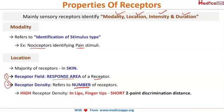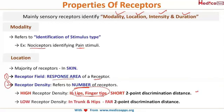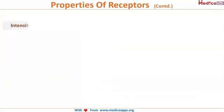High receptor density is seen in the lips and fingertips, which helps in short two-point discrimination distance. That means even when two points of stimuli are very close together, these areas can easily differentiate them as two different stimuli. Low receptor density is present in the trunk and hips, which have a larger two-point discrimination distance.